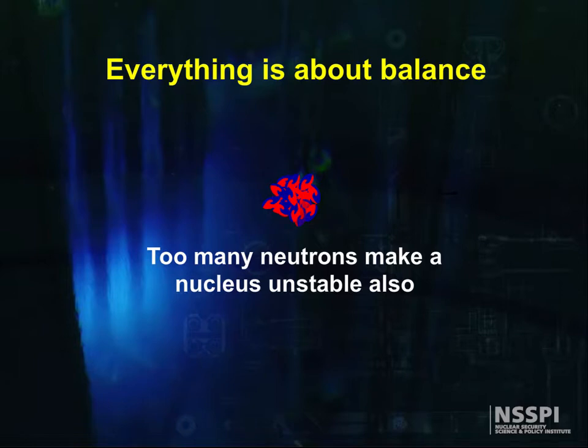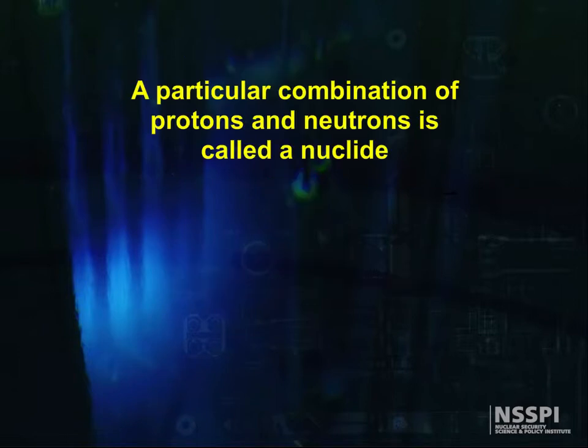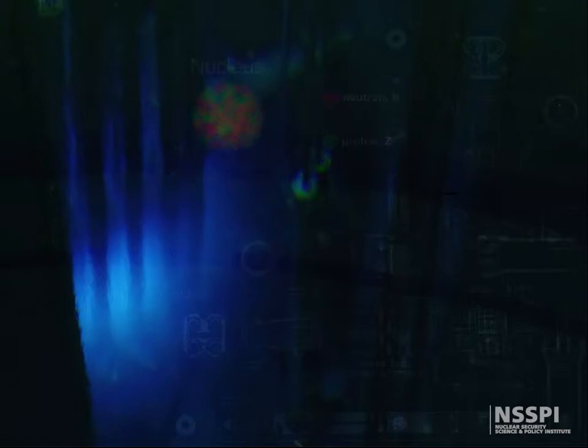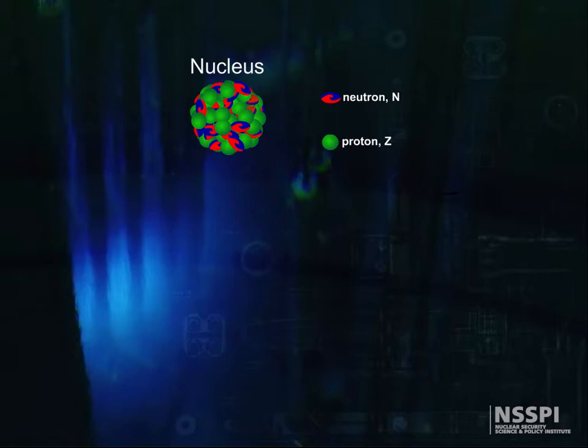Of all the combinations of protons and neutrons, there are only a couple of hundred that are stable. A particular combination of protons and neutrons is called a nuclide. Let's look at the stable nuclides and some of the unstable ones also. Since we're defining things, let's be specific about terms I've been throwing around.